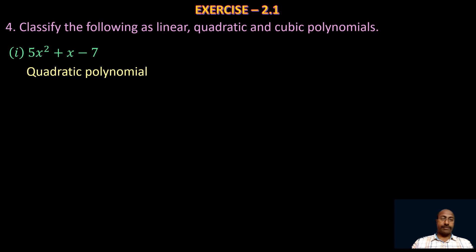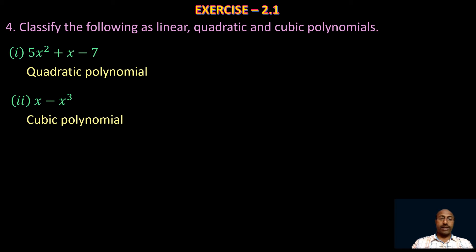Take the second one: x − x³. In this polynomial the highest power of the variable is 3, so the degree of the given polynomial is 3. Hence it is a cubic polynomial — a polynomial of third degree is called a cubic polynomial.